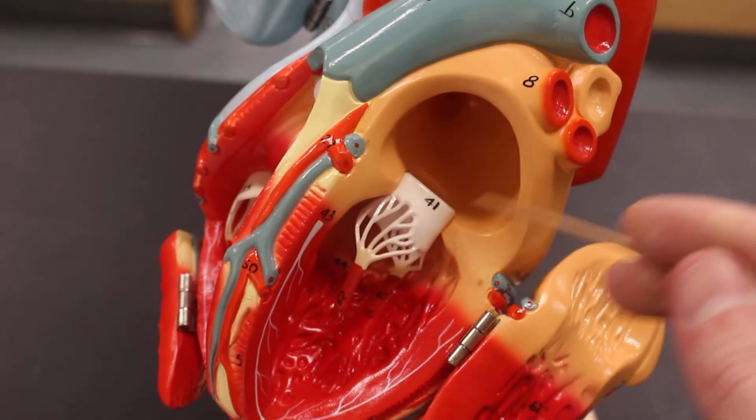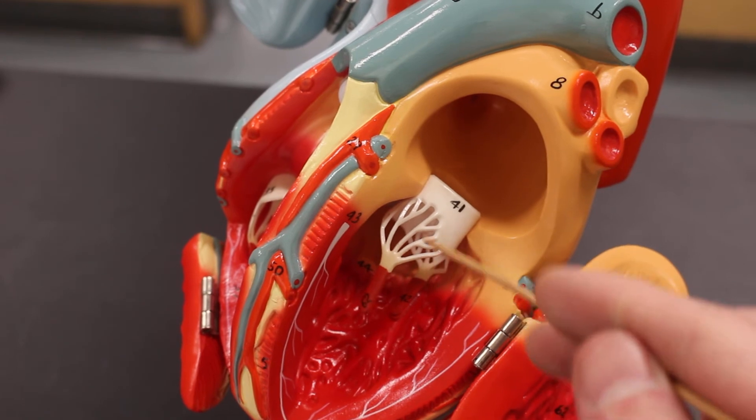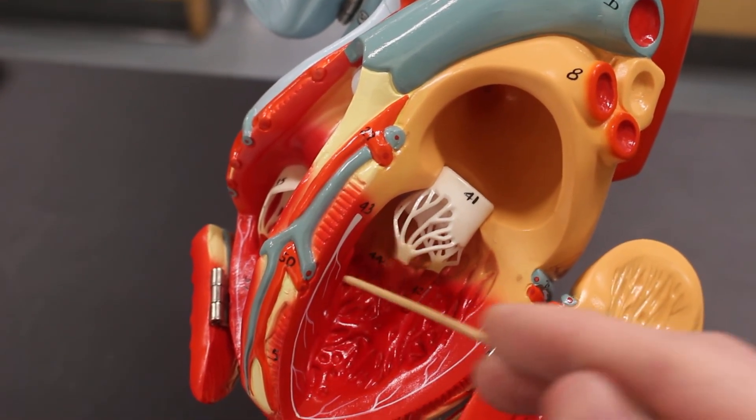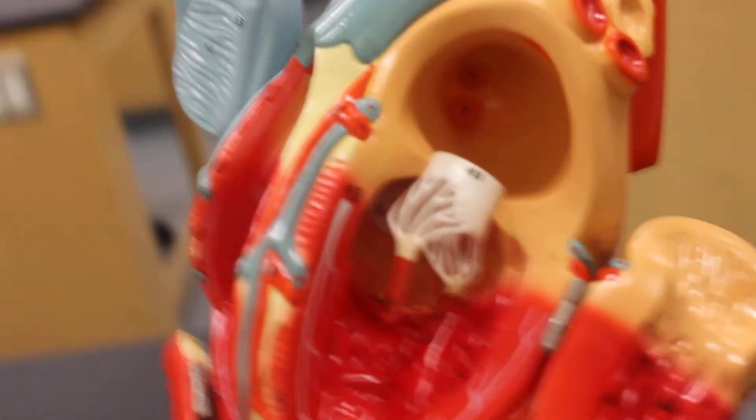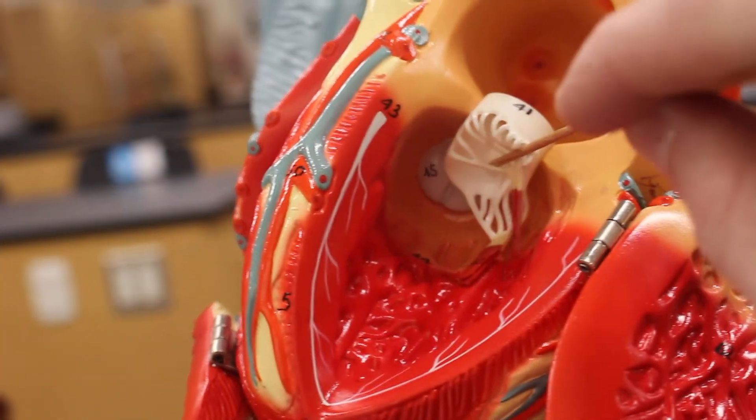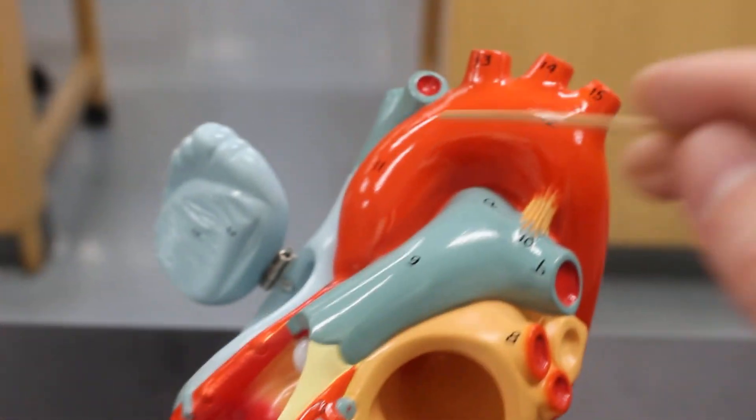Here is the bicuspid valve, also known as the mitral valve. It also has chordae tendineae and little papillary muscles at the ends. Then way up there, you can just barely see it, is the aortic semilunar valve and that leads to the aorta.